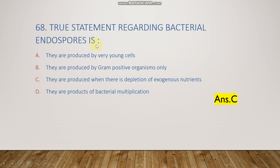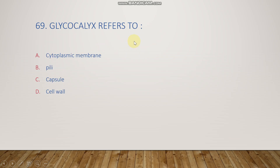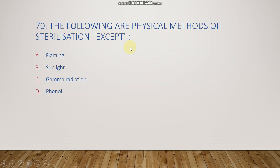The next question: glycocalyx refers to cytoplasmic membrane, pili, capsule, or cell wall? The right answer is option C, capsule.